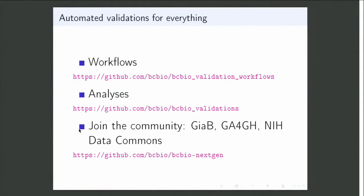What this is trying to build is a set of automated validations for everything — reusable things that people can use to make sure tools work well. We have a GitHub repo with all of these written in CWL so they're portable everywhere. We have a set of validations with outputs, interpretations, and improvements. More importantly, we have a community. Brian talked about validations in the context of the Human Cell Atlas. There's Genome in a Bottle, GA4GH, NCI data commons — a bunch of different groups all needing to do validation. This is a plea: if you're a validation nerd like myself, this is the community and the tooling you want to use to make that happen. Thanks for your time.